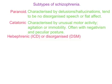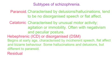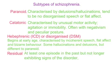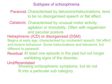Hebephrenic schizophrenia, as categorised by the ICD, or disorganised schizophrenia, as categorised by the DSM, often begins at an early age and is characterised by incoherent and disorganised speech, flat or inappropriate affect, and bizarre behaviour. There are also hallucinations and delusions, but these are not as structured as in paranoid schizophrenia. Residual schizophrenia is where at least one episode of schizophrenia has been experienced in the past, but the individual is no longer exhibiting prominent signs of the disorder. This is diagnosed when an individual is clearly showing schizophrenic symptoms but does not fit neatly into one of the other subcategories. Sometimes it is later seen as an early sign of one of the other subtypes.